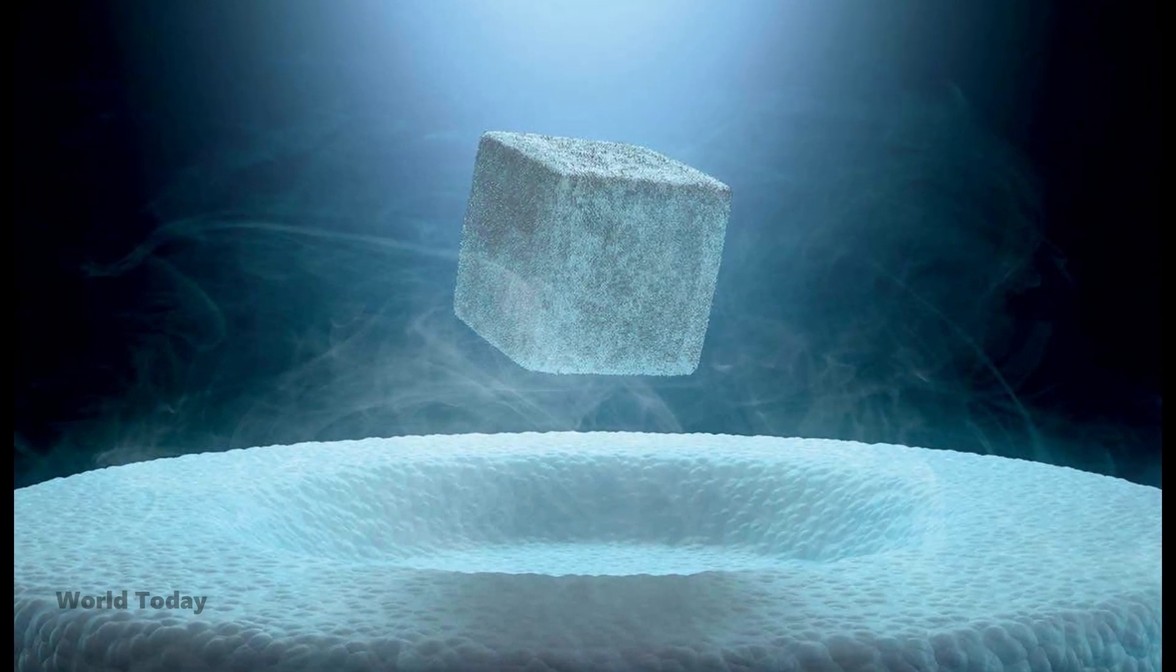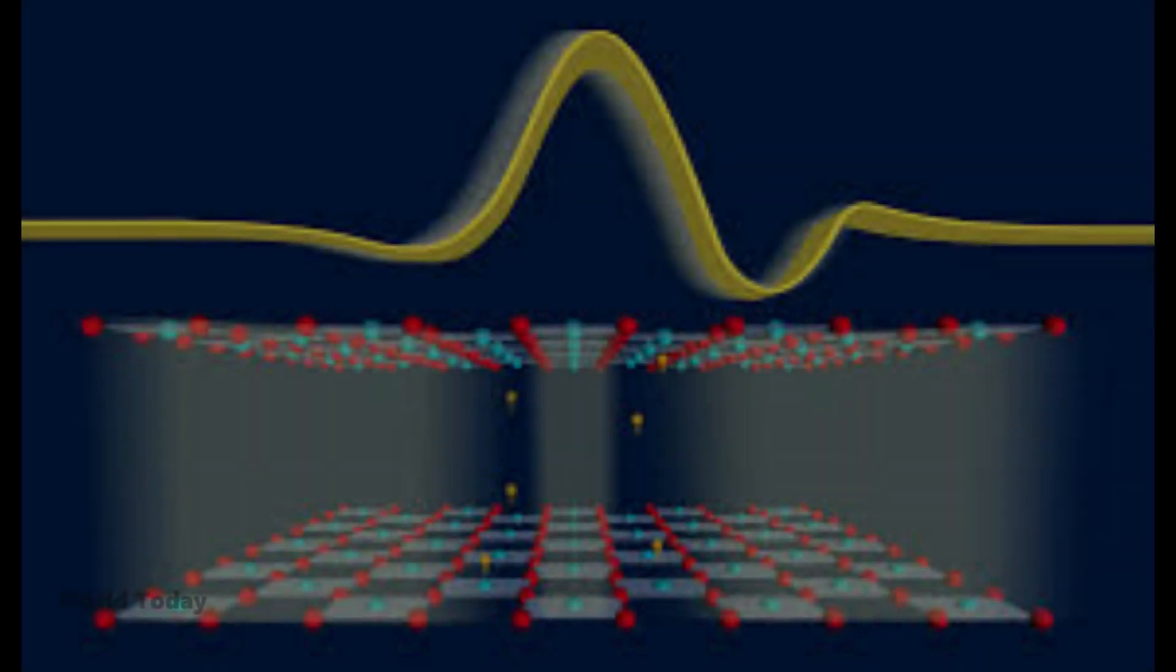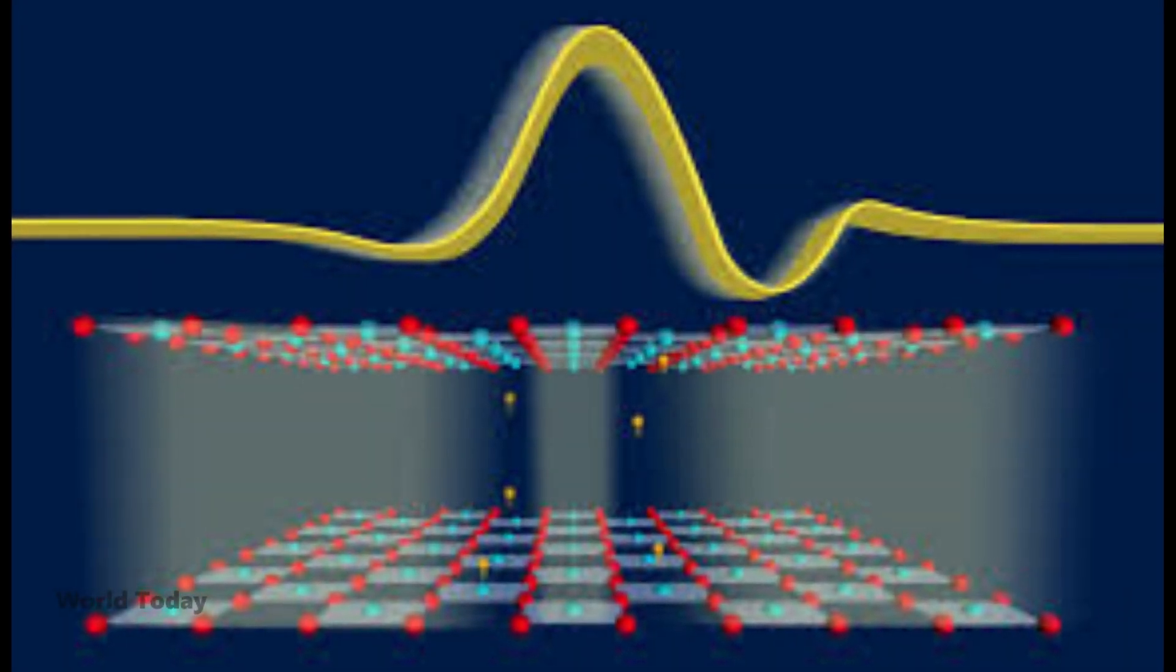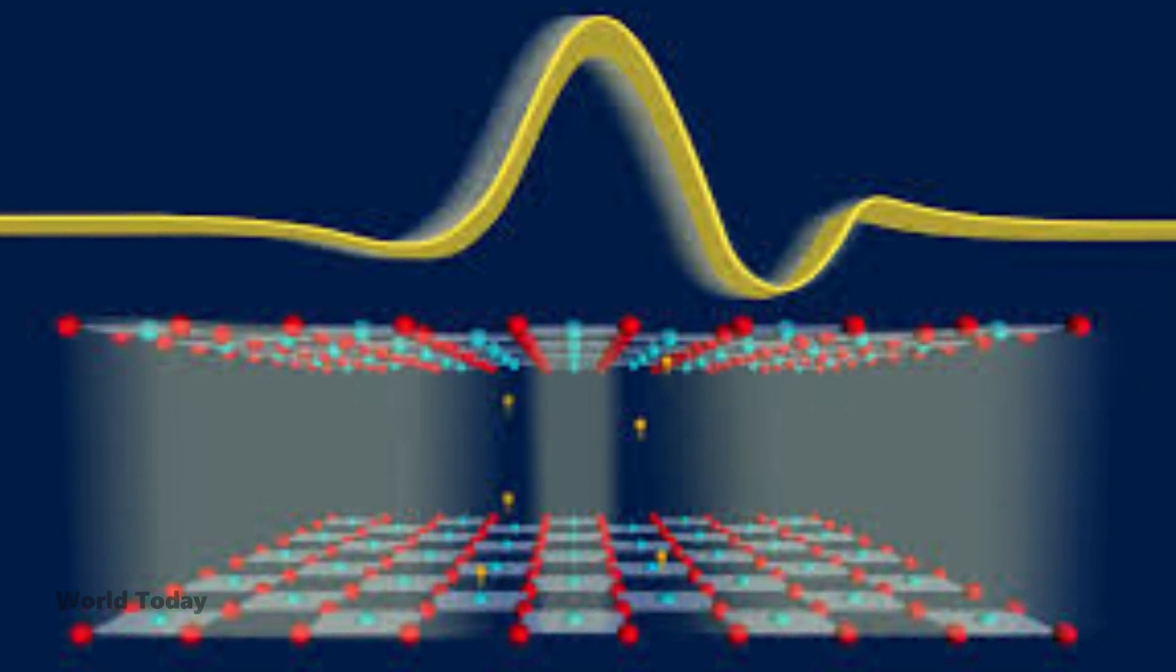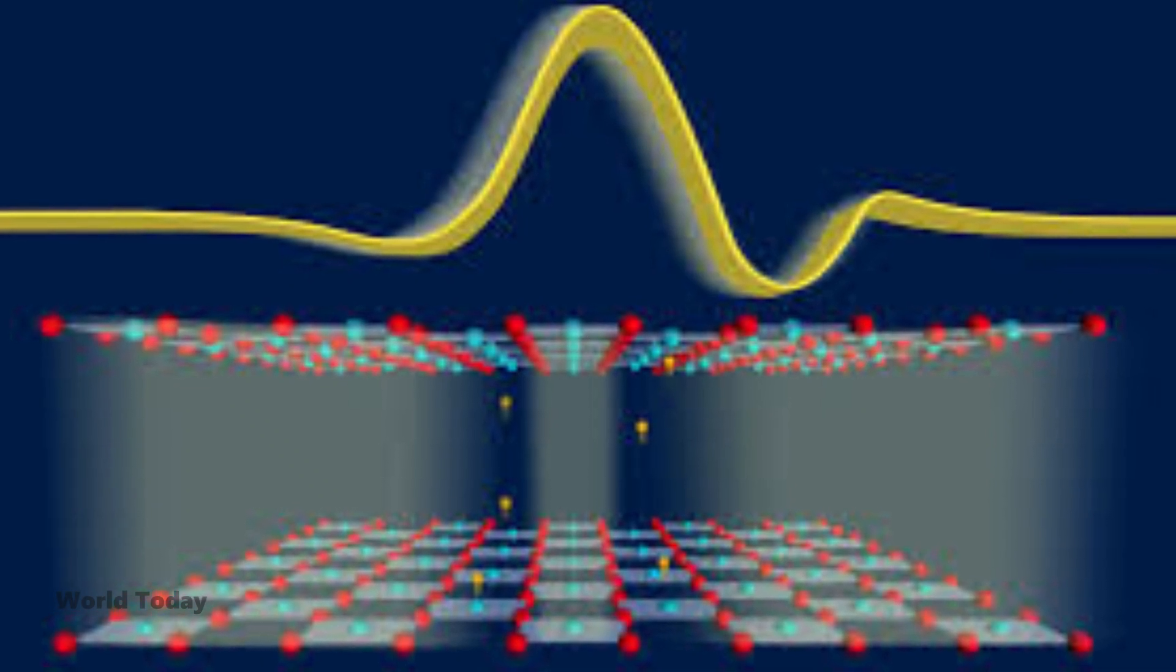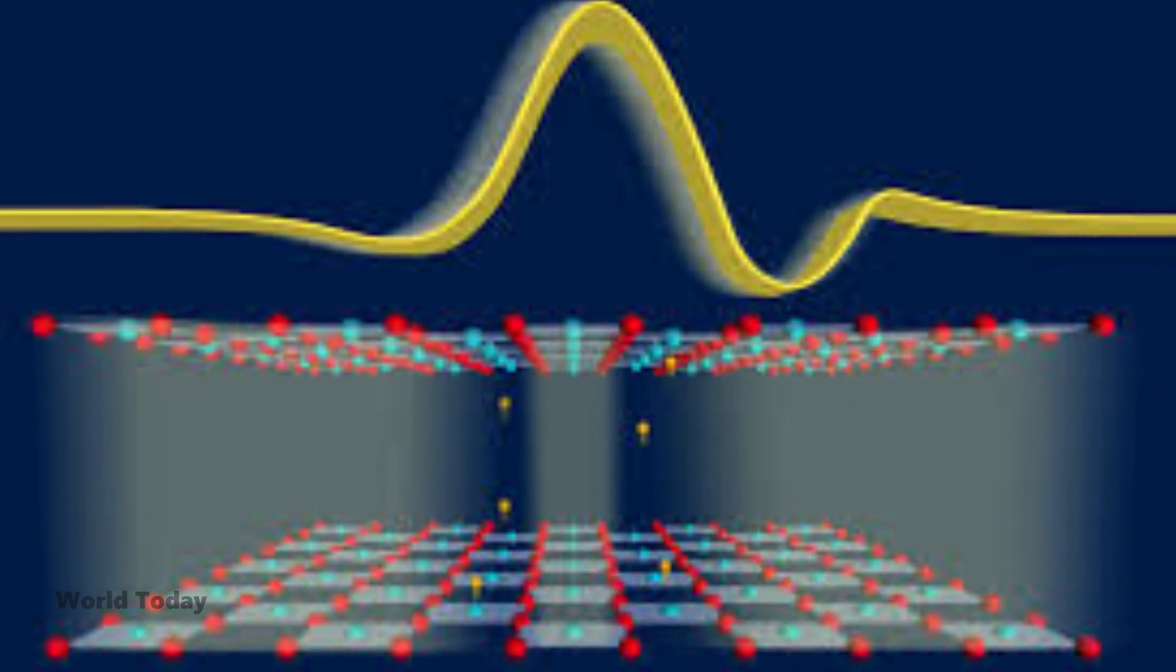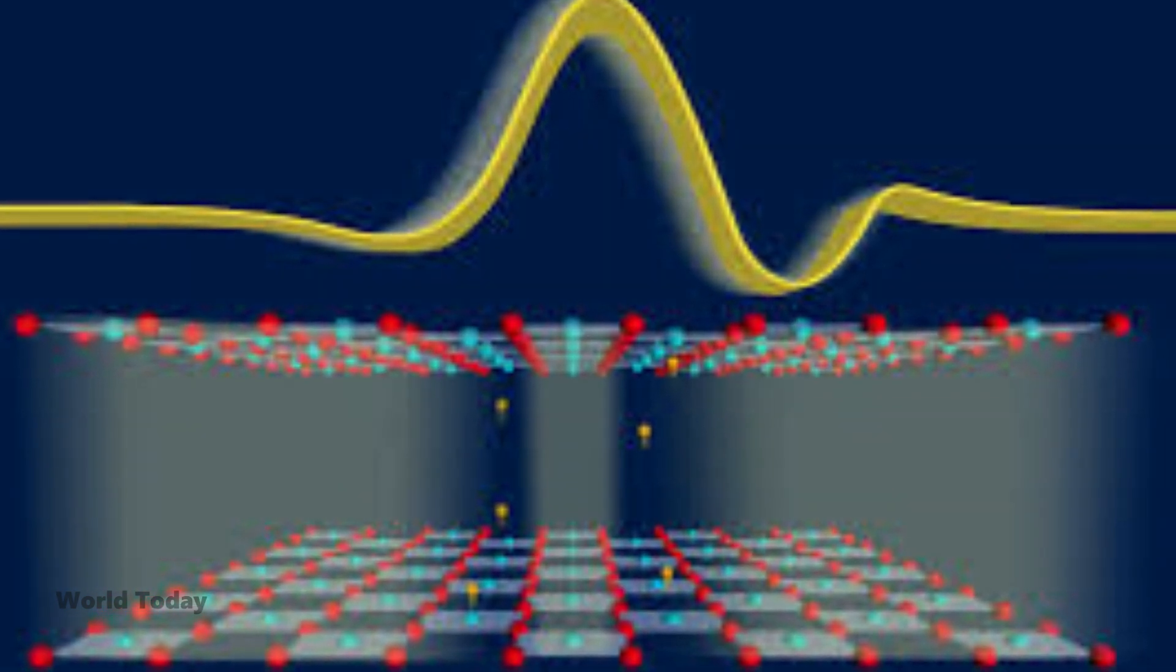Superconductivity was first discovered in 1911. It consists of two key properties. The first is zero resistance. Usually the flow of an electric current encounters some degree of resistance, a bit like how air resistance pushes back on a moving object. The higher the conductivity of a material, the less electrical resistance it has and the current can flow more freely.